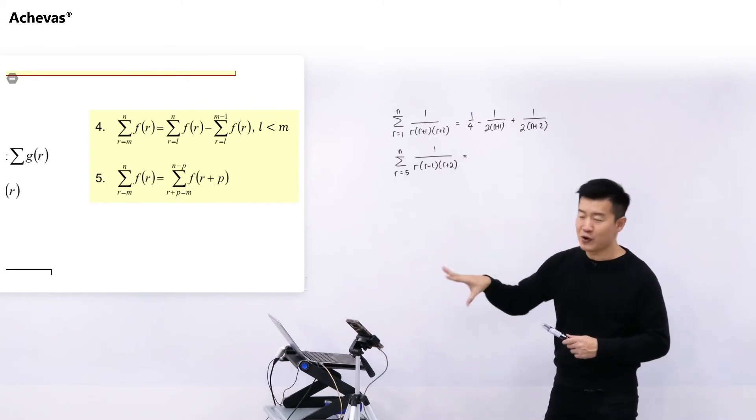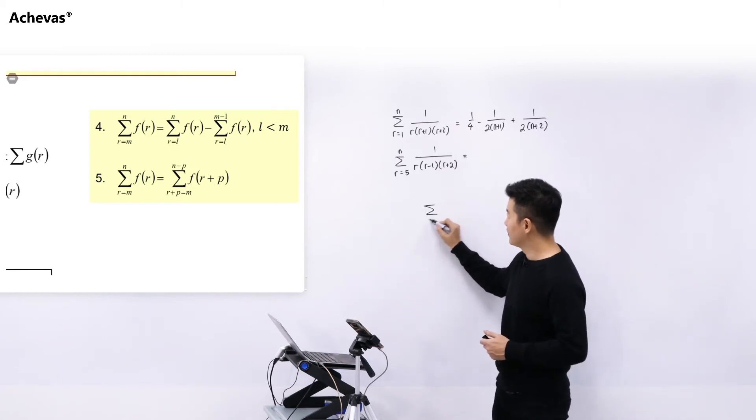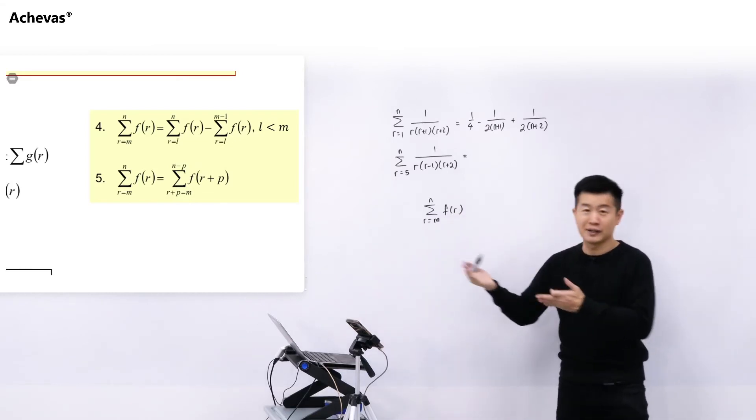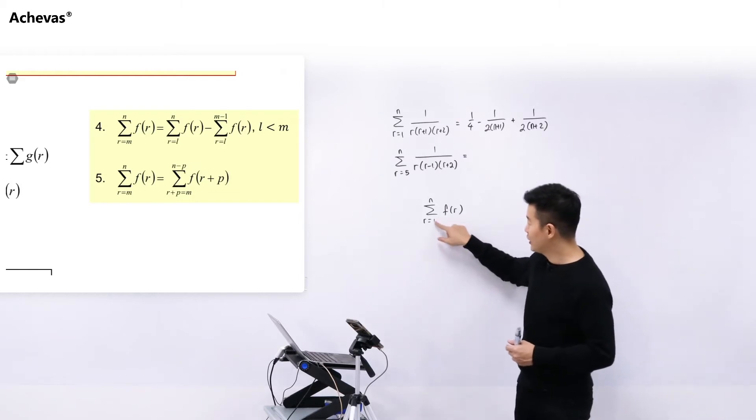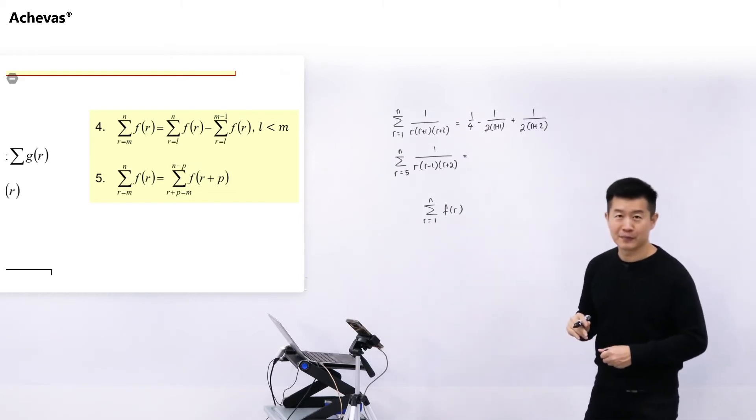Let me just very quickly go through with you how exactly this works. So we are having a summation from R is equal to M all the way until N of F R. Let me show you why this can become what that is on the right hand side. Maybe let us just simplify this a little bit in terms of our discussion by instead of M, maybe let us take a look at it as if it is 1.